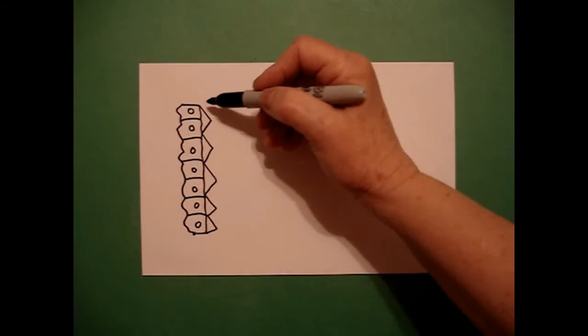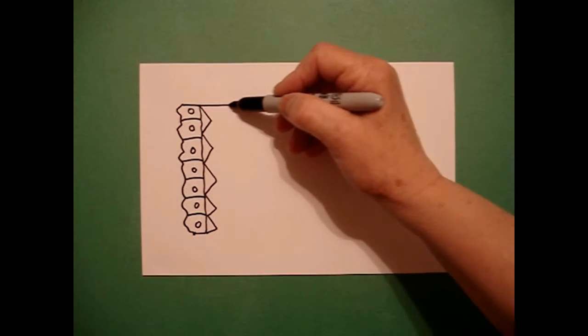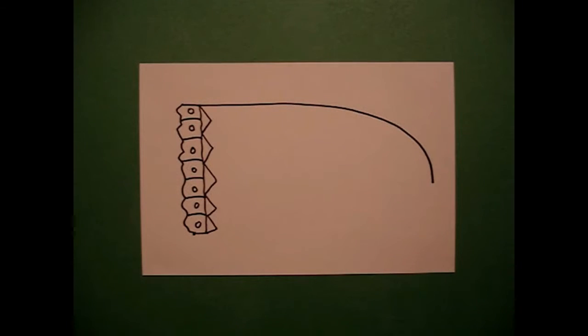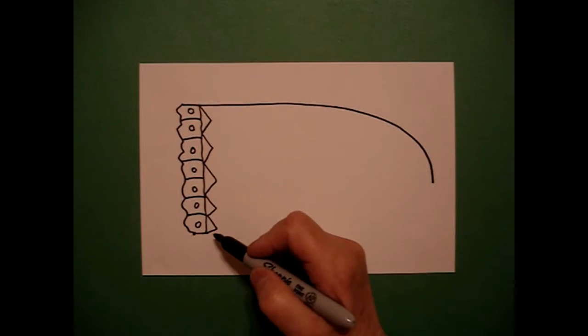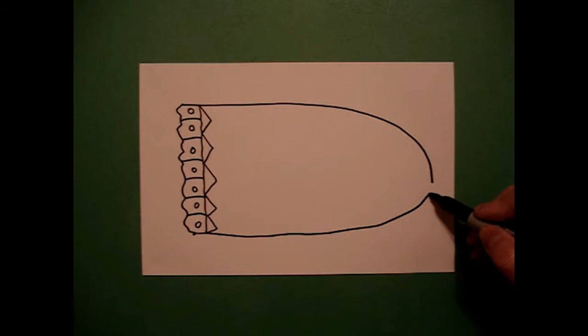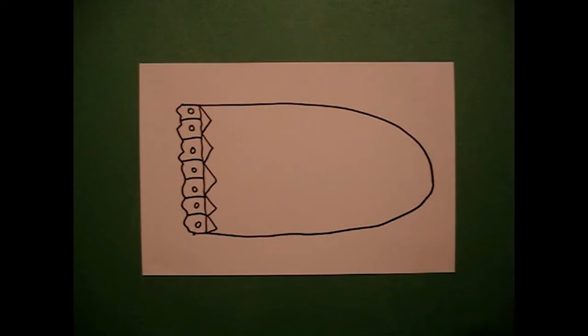Now, I'm going to come back up to the top and I'm going to draw a big curved line, keep going, keep going all the way to the right hand side. I'm going to come to the bottom and I'm going to draw a big curved line, keep going, keep going all the way up and connect. This is the whale's tooth.